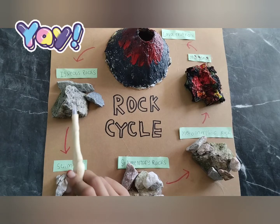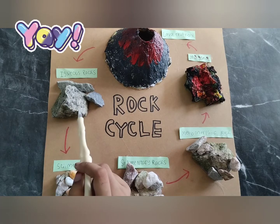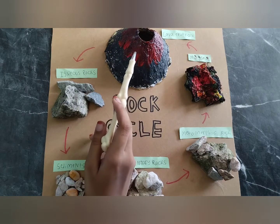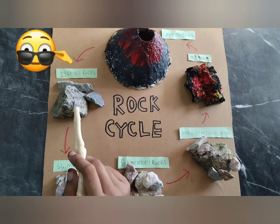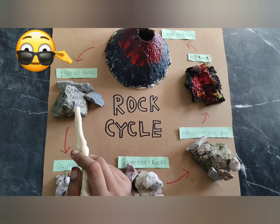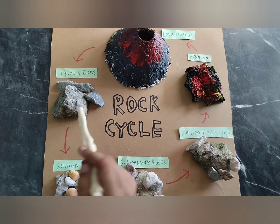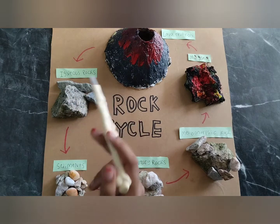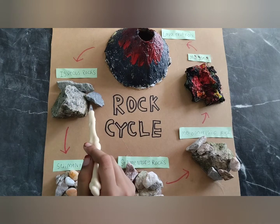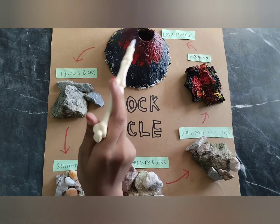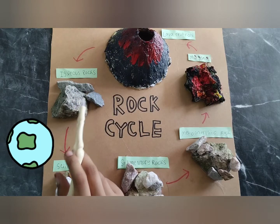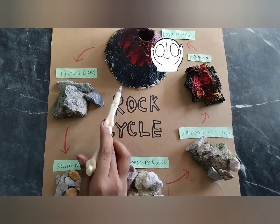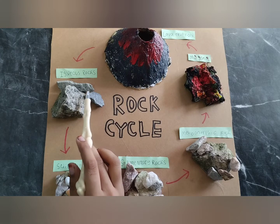Let's talk about the igneous rock. The name igneous comes from the Latin word which means fire. These rocks are formed of magma, which is molten material found deep inside the earth's crust. This magma comes out of a volcano and cools down and solidifies. There are two types: when the magma solidifies inside the earth's surface, it's called intrusive igneous. When the magma erupts above the earth's surface, it's called extrusive igneous.